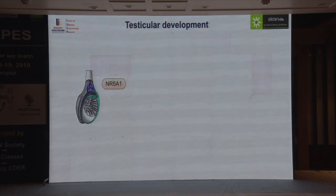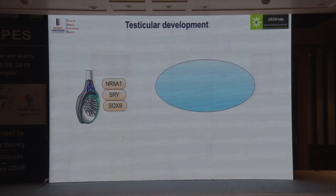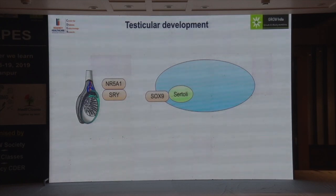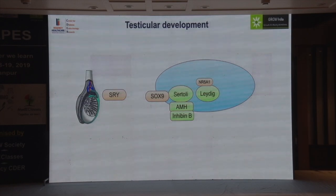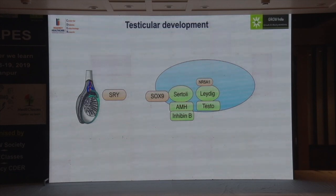In testis development, various genes play different roles across three major cell lines: Leydig cells, Sertoli cells, and germ cells. NR5A1 controls Leydig cells. SOX9 dominantly controls Sertoli cells, and Sertoli cells produce AMH and Inhibin B, which cause suppression of the Müllerian structures. Leydig cells produce testosterone, and also insulin-like factor 3 (INSL3).